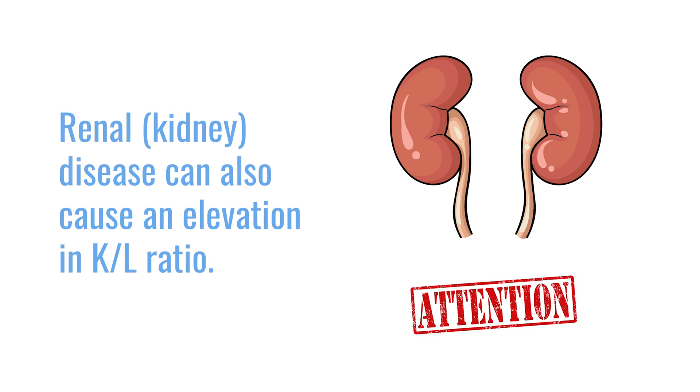There are some scenarios where we can see a false elevation of one of those light chains — specifically in people who have end-stage renal disease or very bad kidney function. In those cases, we can see a false elevation of the kappa light chains that extends the normal range of 0.26 to 1.65 up to three. Having that abnormal ratio in those cases doesn't necessarily mean there's a possible cancer, MGUS, or an abnormal clone — it just means the kidneys are not processing the light chains at the same rate, because we tend to accumulate more kappa than lambda, which throws the ratio slightly off.